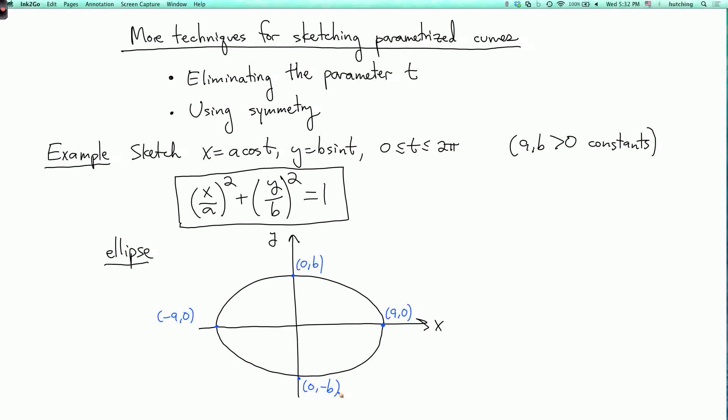Now we have to be a little careful because depending on what the range of the parameter is, we may or may not actually get the entire ellipse. We might only get part of it. So let's check. So at time t equals 0, we're here, the point (a,0). At time t equals π/2, we've moved over to (0,b). At time t equals π, we're at (-a,0). At time t equals 3π/2, we're at (0,-b). At time t equals 2π, we're back where we started.